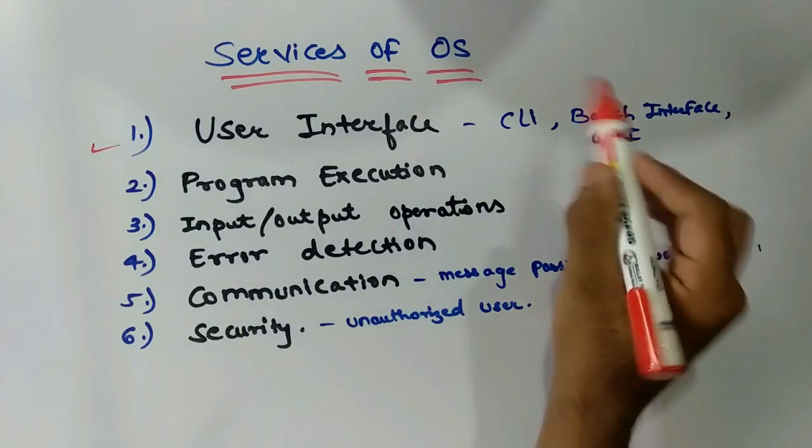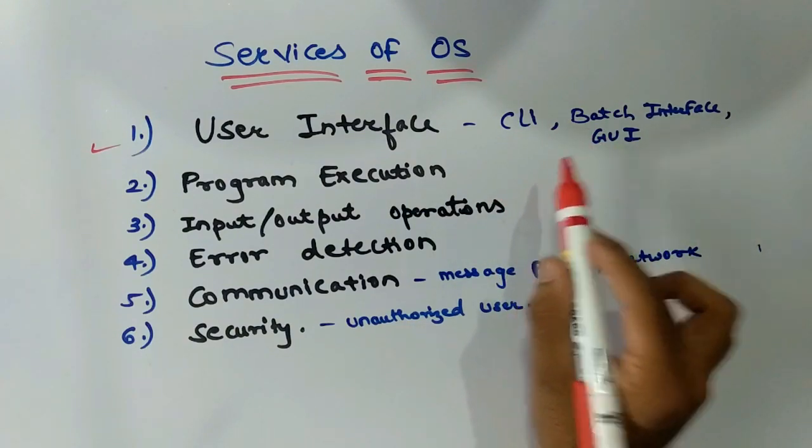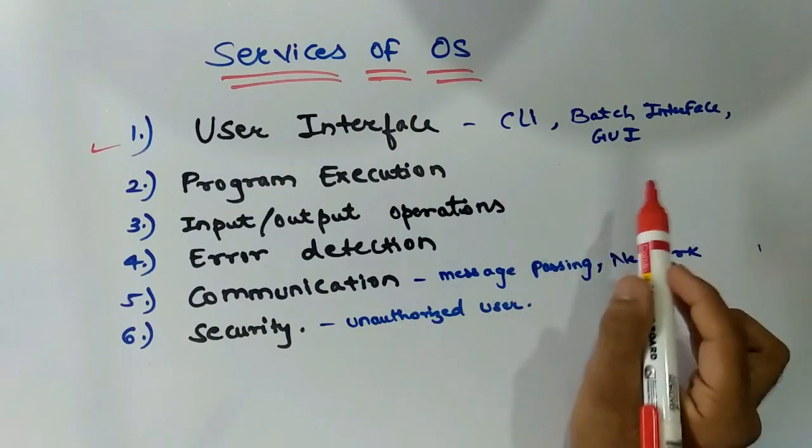User interfaces are categorized into three types: CLI which is known as command line interface, batch interface, and GUI graphical user interface.